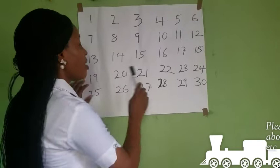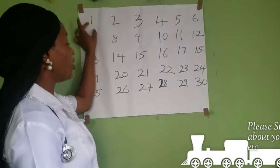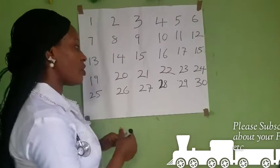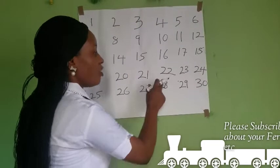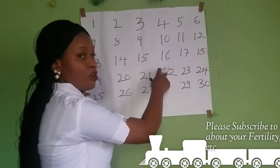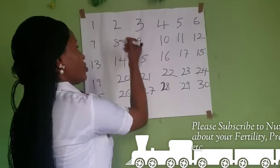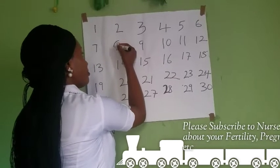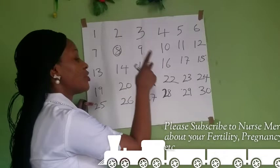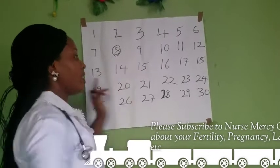If you have a 22-day menstrual cycle, let's say you started seeing your period on the 1st. Subtracting 14 from 22 gives you 8. That means if you have a 22-day menstrual cycle, your ovulation takes place on day 8.